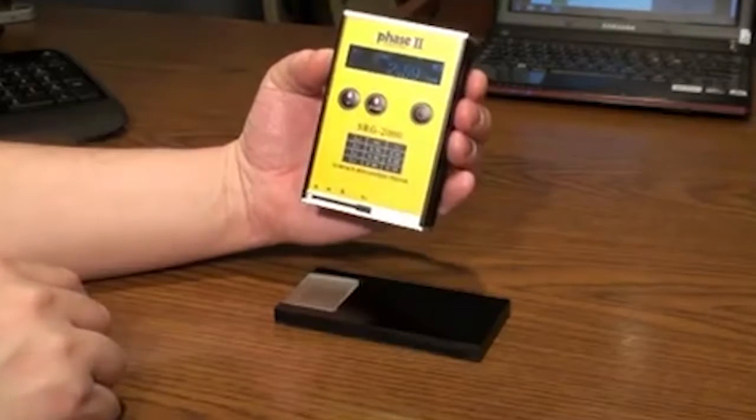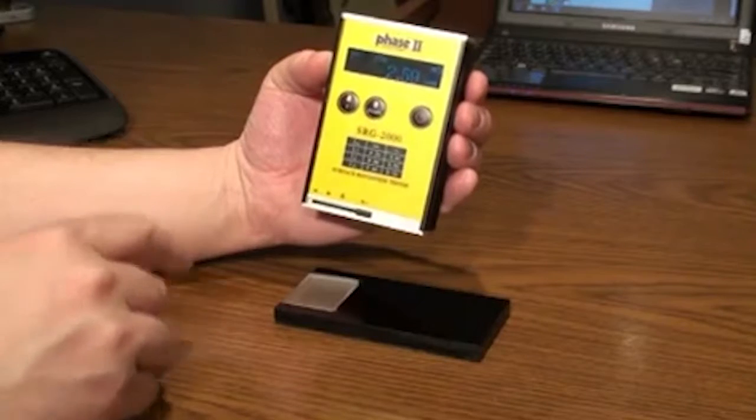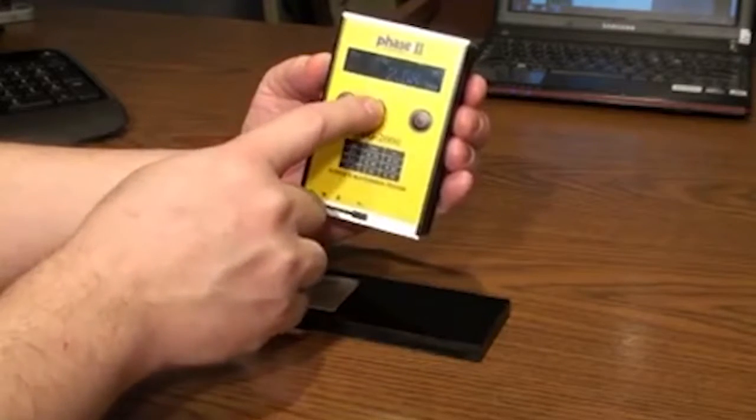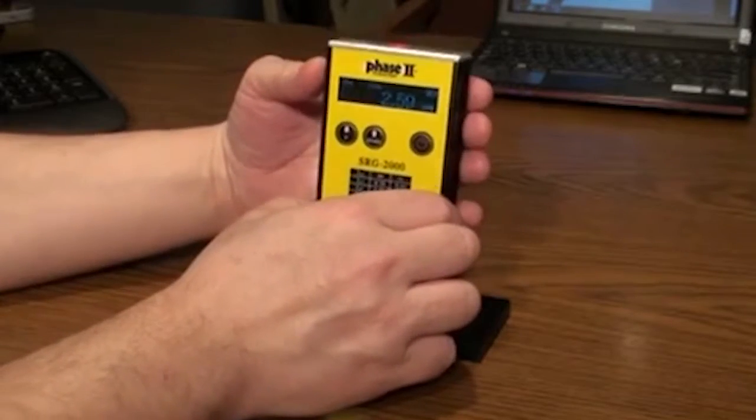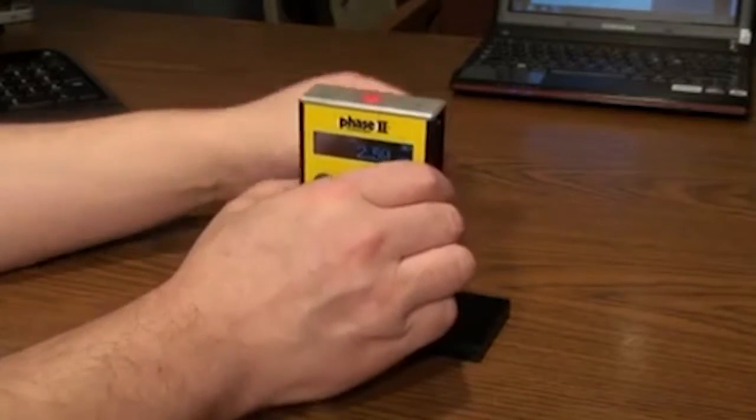If this value doesn't match your test sample, then you must adjust it by pressing the up or down arrow buttons on the keypad. Press the start button on top and the unit will begin calibrating itself.